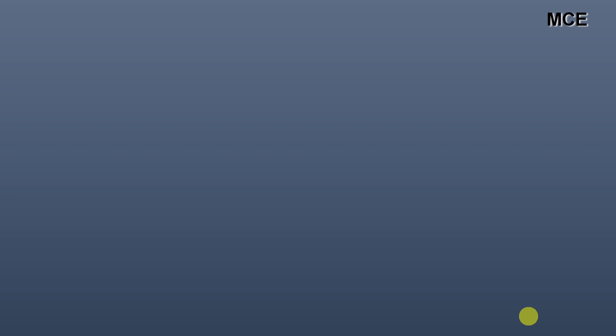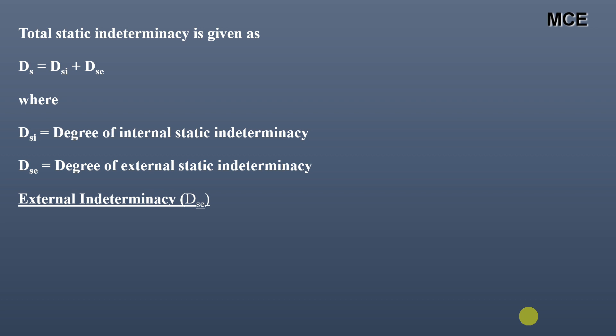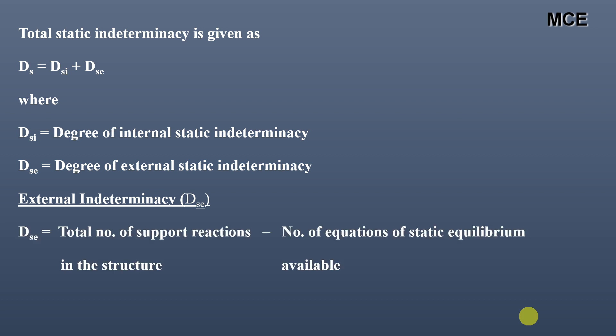The total static indeterminacy of any structure is given as the sum of internal static indeterminacy and external static indeterminacy. The external indeterminacy is calculated as the total number of support reactions minus the number of equations of static equilibrium available, so it equals r minus 3, where r is the number of reactions in the structure.